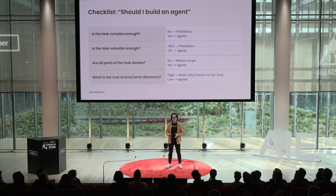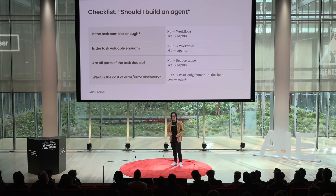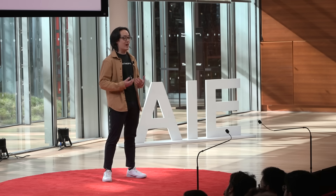Finally, the last important thing to consider is the cost of error and error discovery. If your errors are going to be high-stake and very hard to discover, it's going to be very difficult to trust the agent to take actions on your behalf and have more autonomy. You can always mitigate this by limiting the scope — you can have read-only access, you can have more human in the loop — but this will also limit how well you're able to scale your agent for your use case.